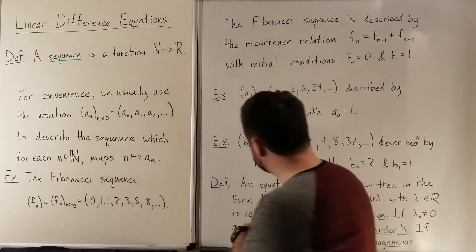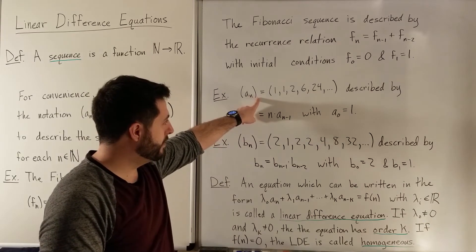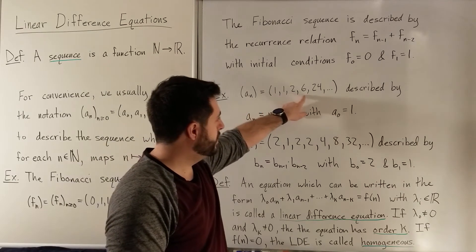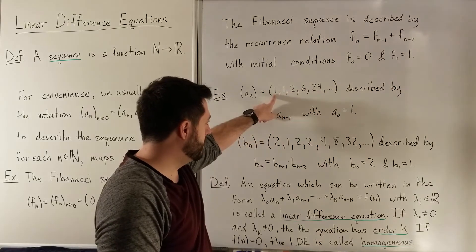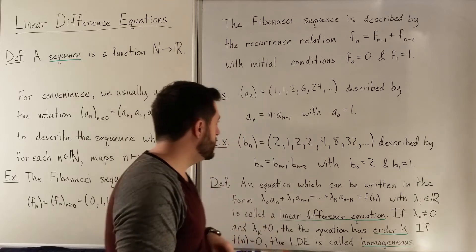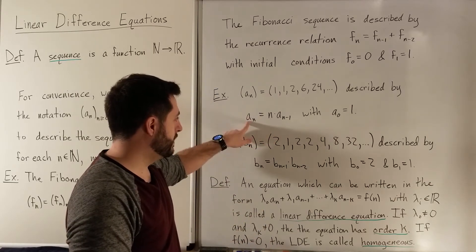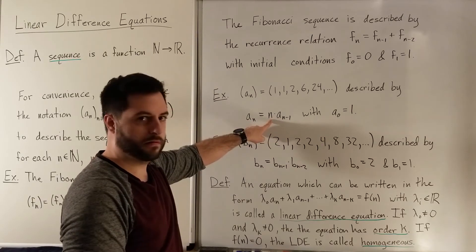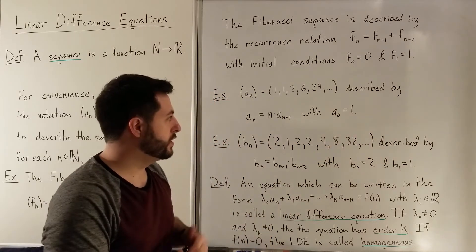There are other sequences here just for other examples. This sequence a_sub_n, starting at n equals 0, is 1, 1, 2, 6, 24 — in general, these are factorials: 0 factorial, 1 factorial, 2 factorial, etc. You can describe this sequence with this recurrence relation: to get the next term in the sequence, you take the previous term and multiply by n. And we also need to describe the first term, which is just 1.